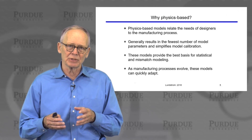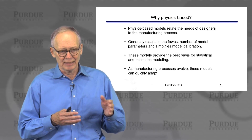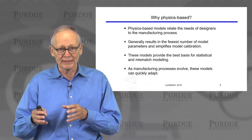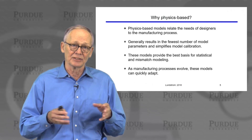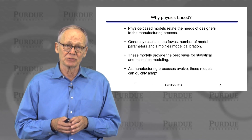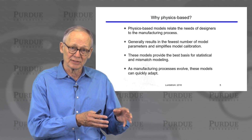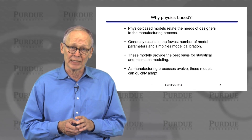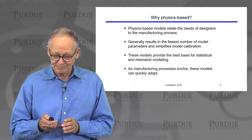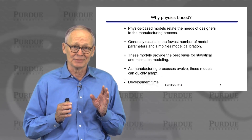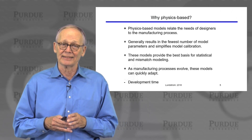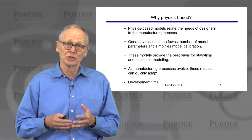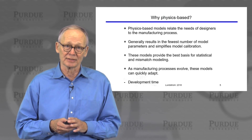As manufacturing processes evolve — maybe some thicknesses of layers, doping densities, or channel lengths change — since these are physical parameters, it's relatively easy to go back in the model and quickly adapt it to the new manufacturing process. The major drawback of these models is that it's very time consuming and a long, involved process to develop very good models of this kind.